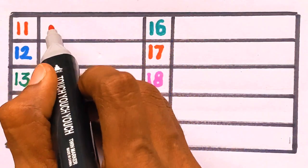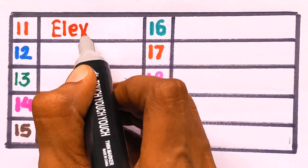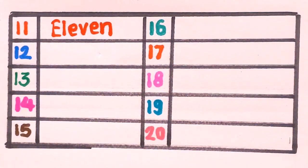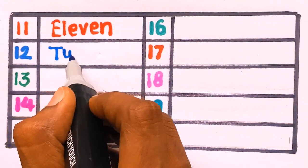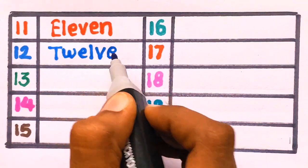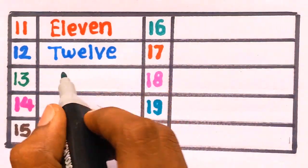11, 11, E L E V E N, eleven, 11. 12, T W E L V E, twelve, 12. Next is 13, 13.